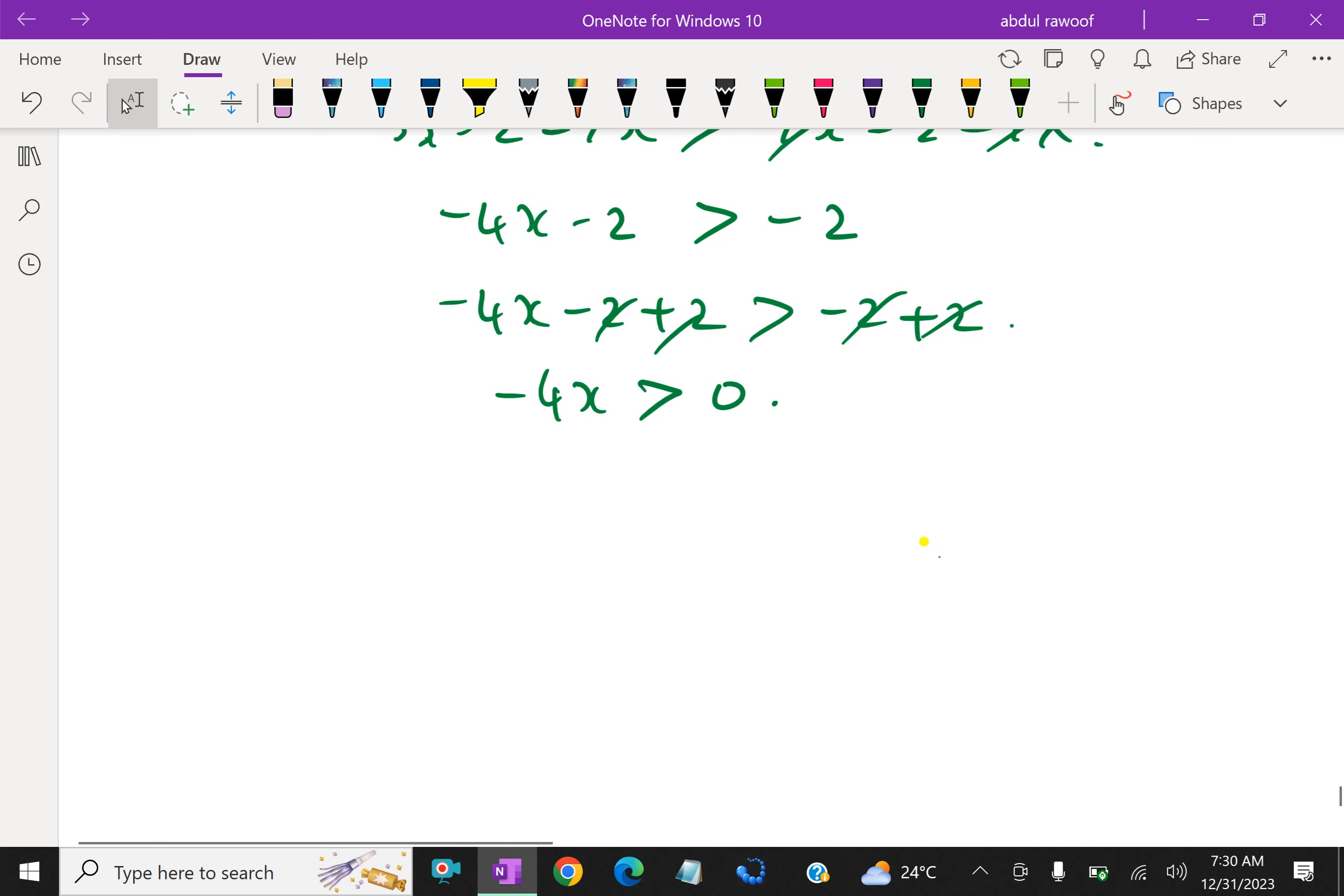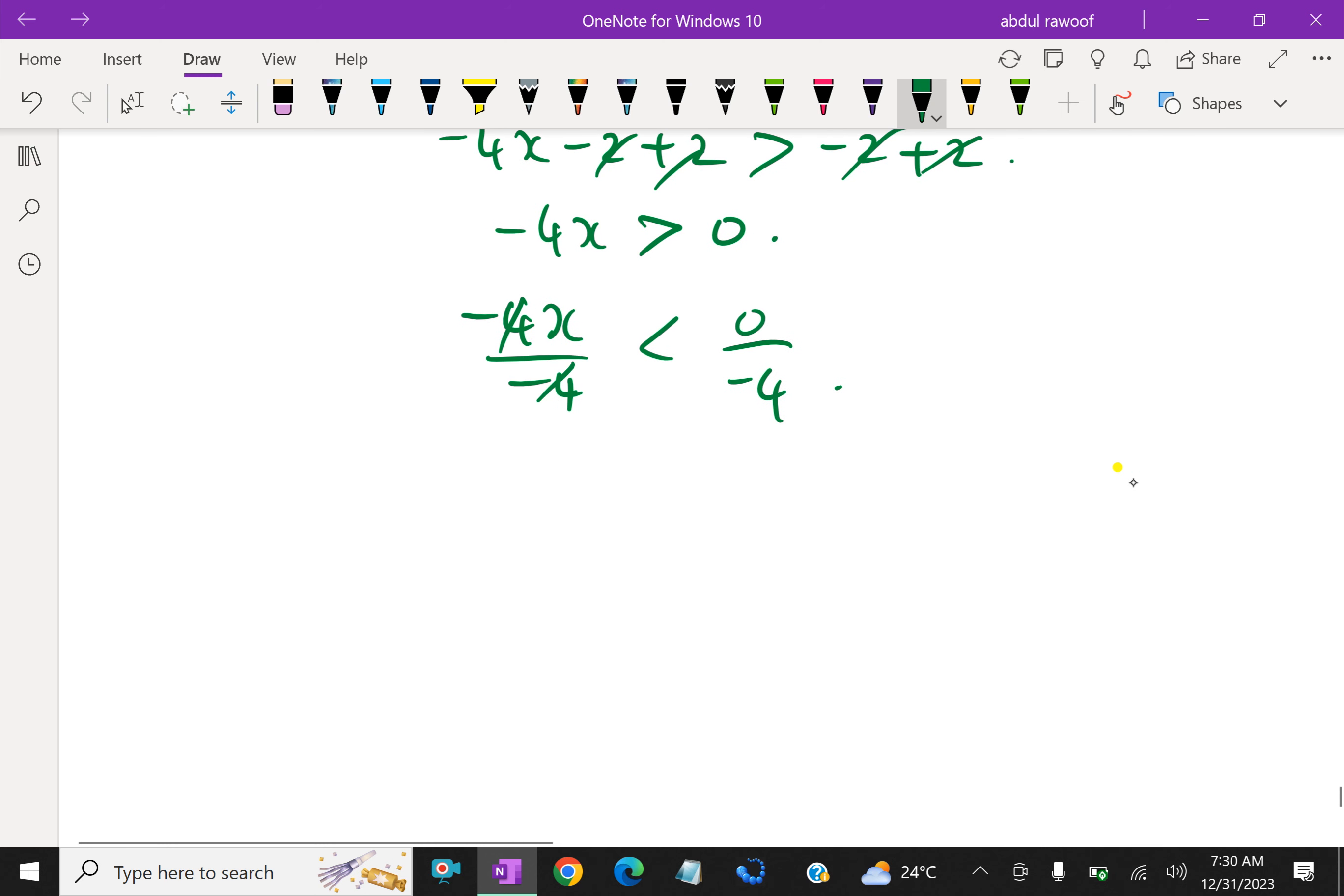Minus 4x is greater than or equal to 0. Then we have to divide both sides by minus 4. So dividing by a negative number, the sign interchanges. Look at here, this greater than becomes less than. So which is equal, that is less than or equal to 0.